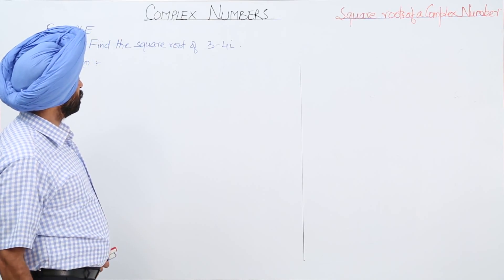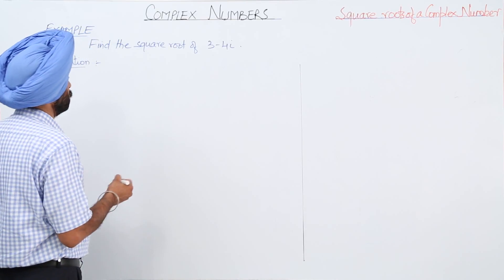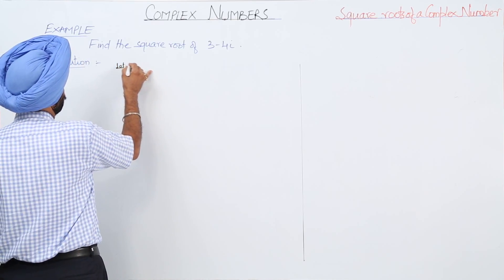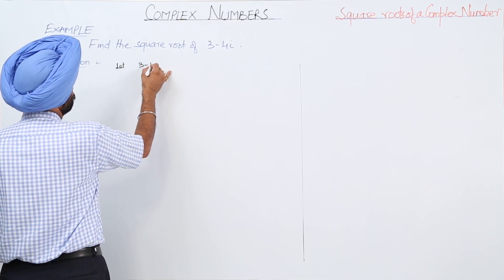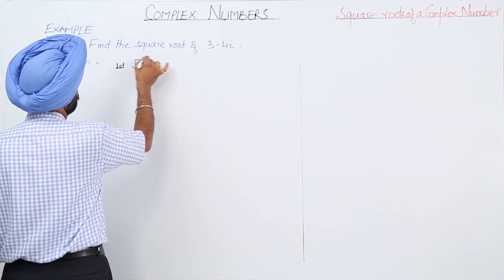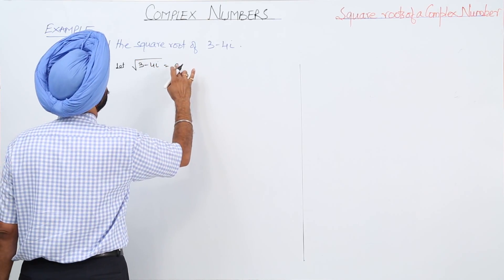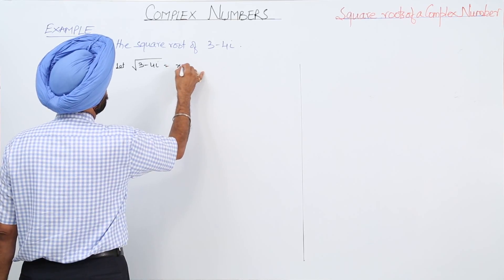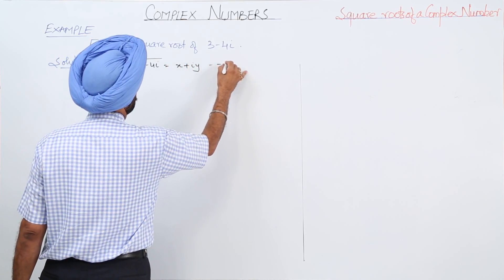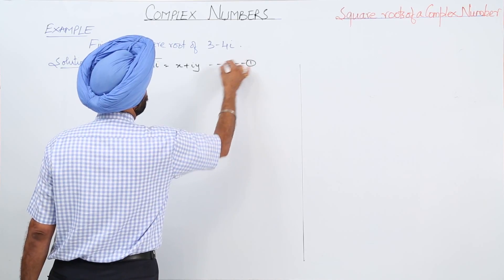Example: find the square root of 3 minus 4 iota. Let the square root of 3 minus 4 iota be equal to x plus iota y — equation 1.